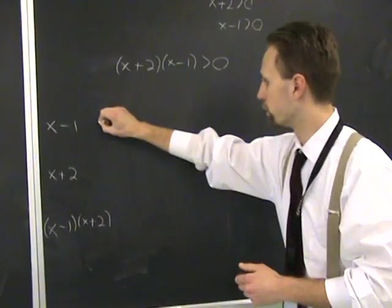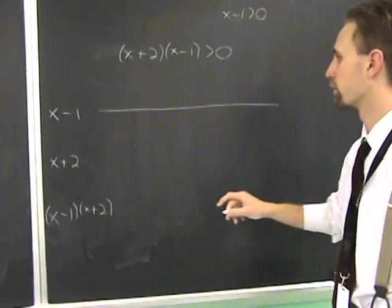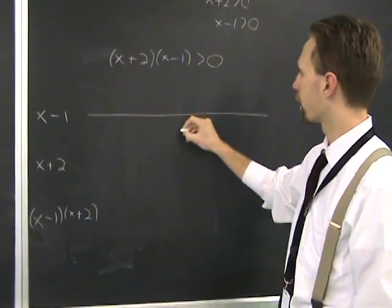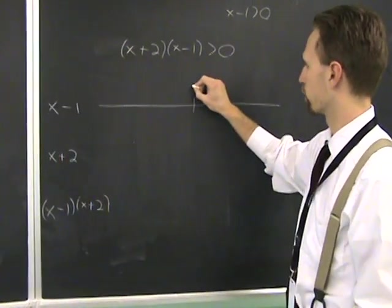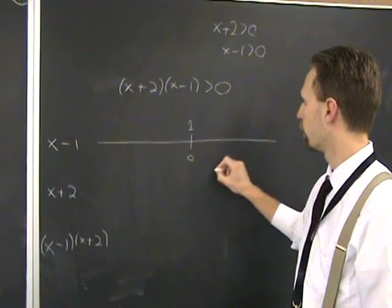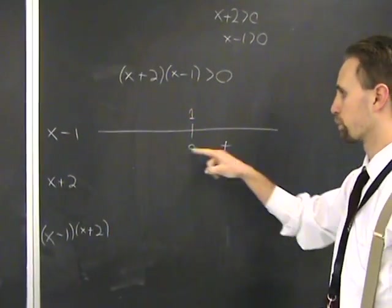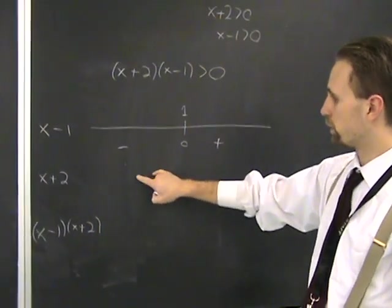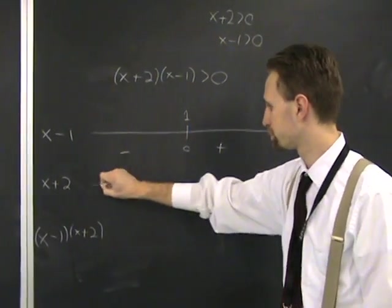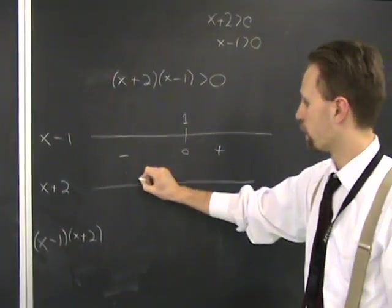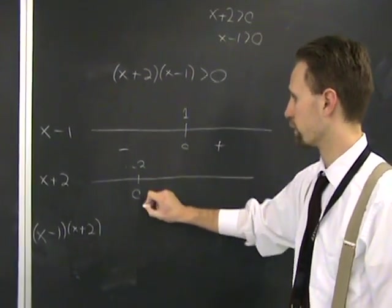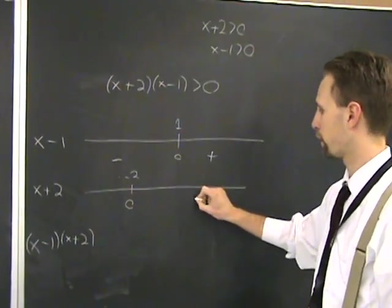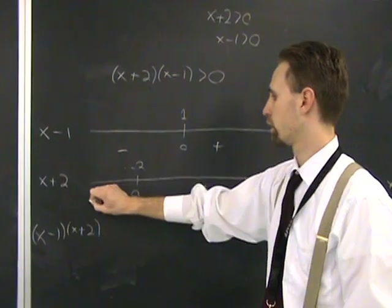So it's about the sign of the product. What I do is draw out a number line for each of your factors here. At 1, this one at 1, it's 0. If the number is greater than 1, plug in, it's going to be positive and negative over here. Then you do the same thing with the other factor. At minus 2, its value is 0. If x is greater than that, it's going to be positive. If x is less than that, it's going to be negative.